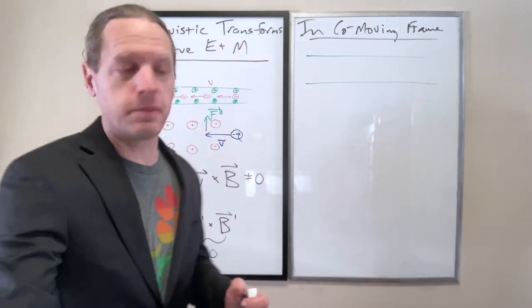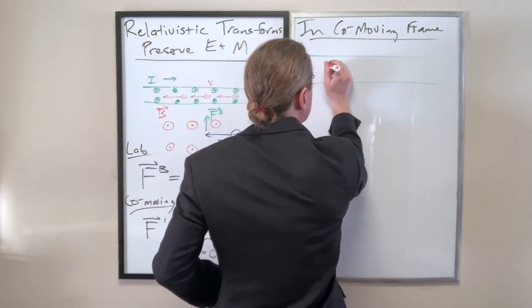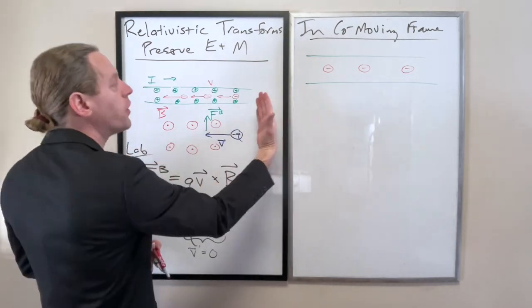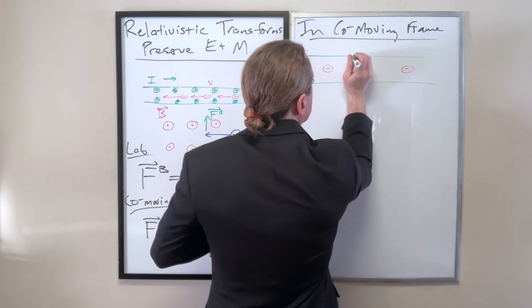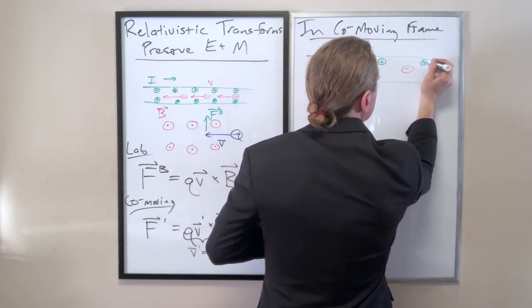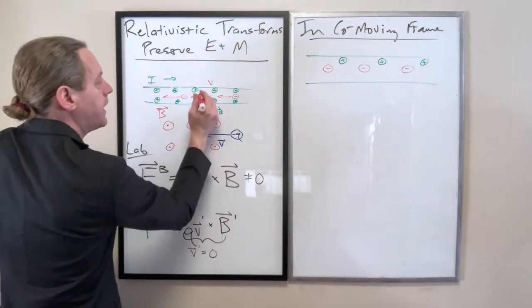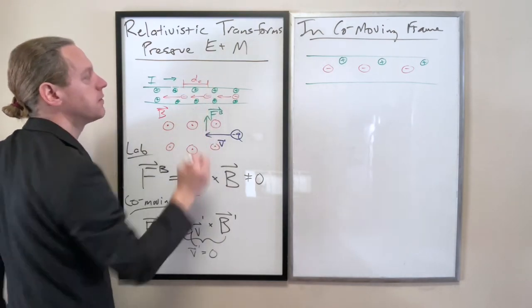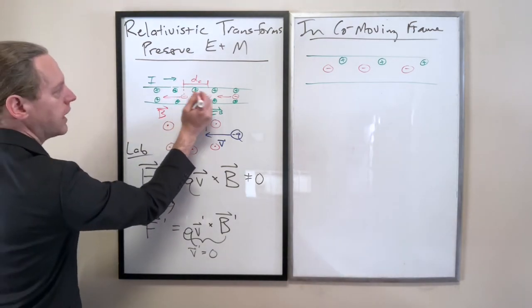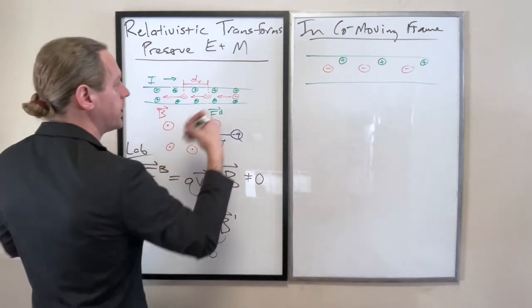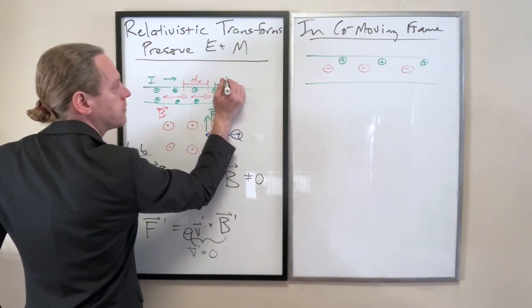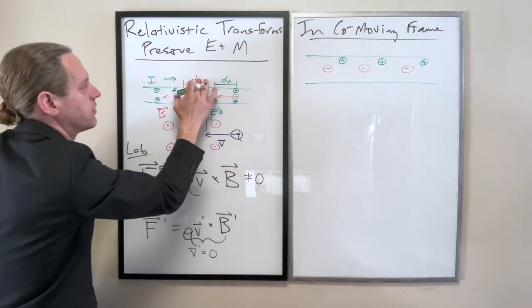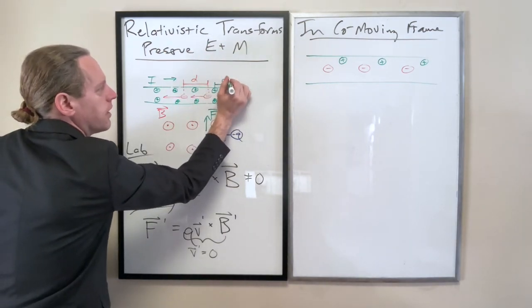So now in the co-moving frame, let's sketch that up here. And we can see there's going to be electrons, but now they're going to be standing still. And I'm just going to draw three of them. And I'm going to draw equal number of protons, but now if we're moving this way, the protons have some forward speed.